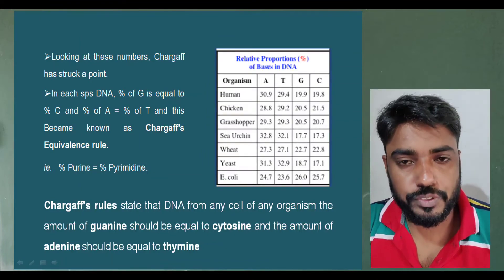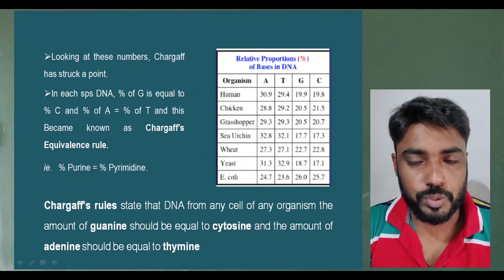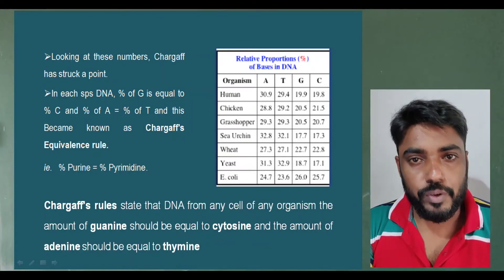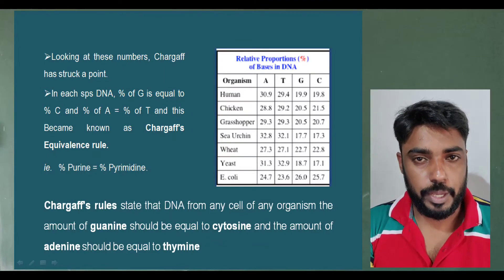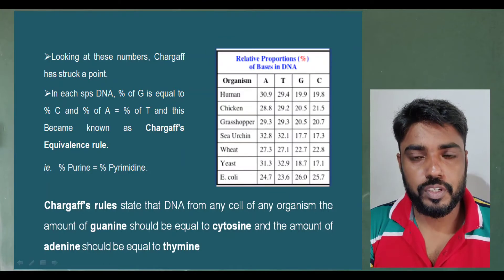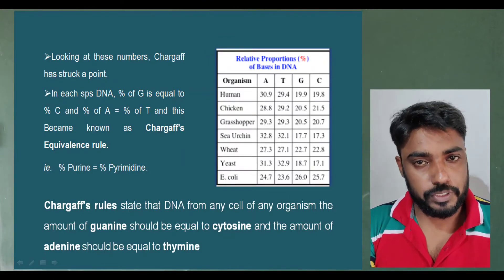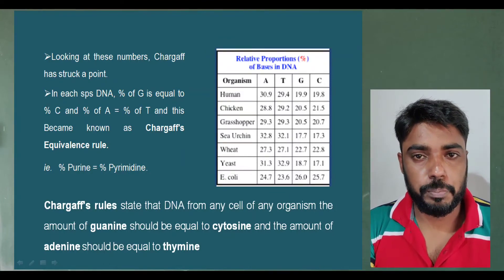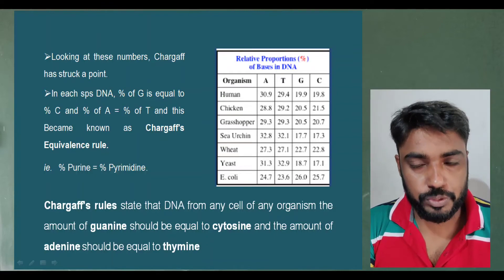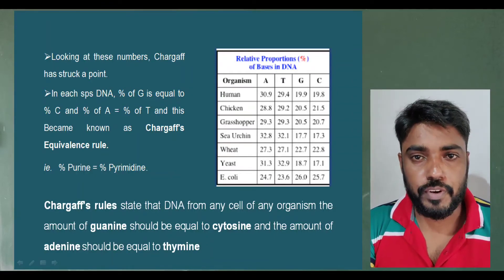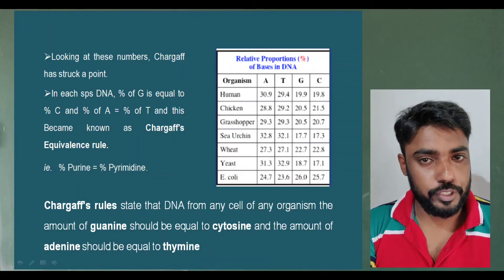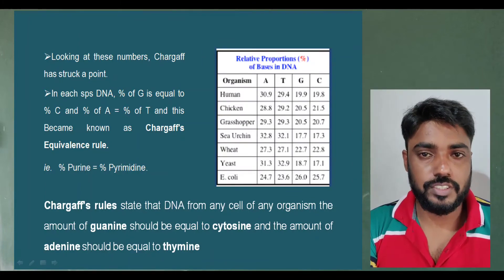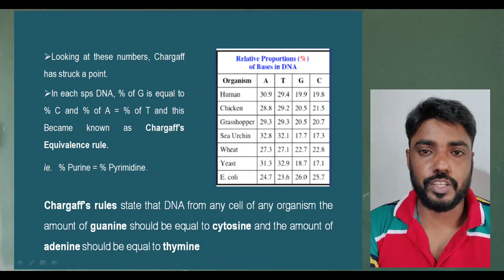Chargaff's equivalence rule states that in DNA from any organism, the percent of guanine will be equal to the percent of cytosine, and the percent of adenine will be equal to the percent of thymine. This is Chargaff's equivalence rule.